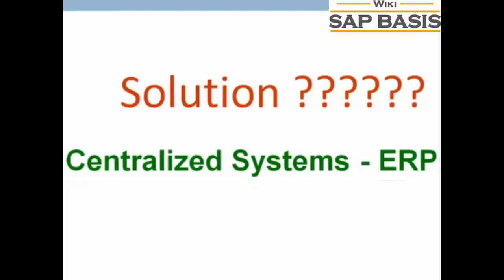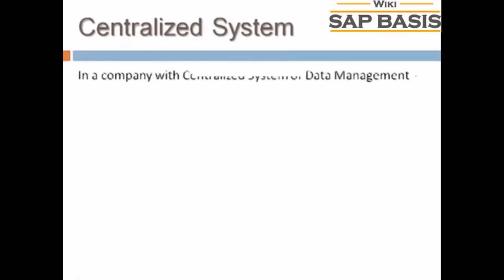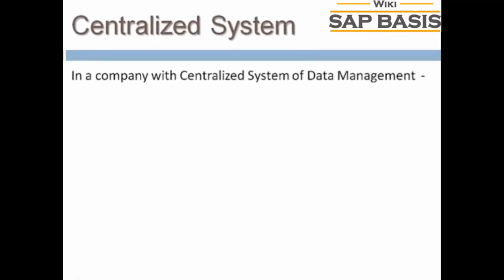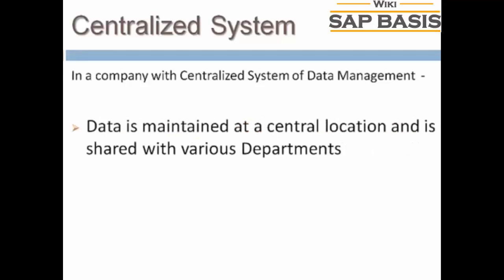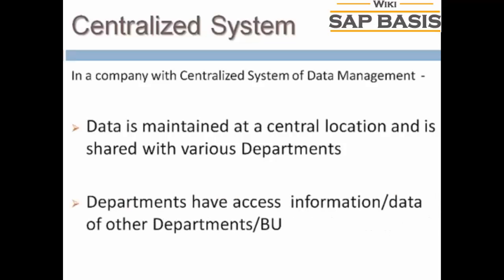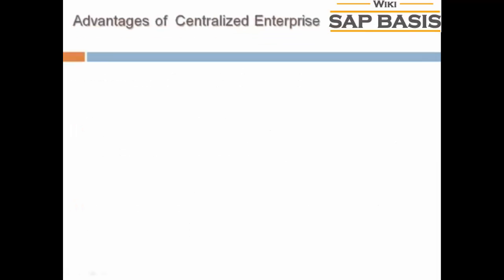The solution lies in centralized systems, that is ERP. In a company with a centralized system of information and data management, data is maintained at a central location and is shared with various departments. Departments have access to information or data of other departments. Let's look at the same business process again to understand how a centralized enterprise system helps overcome the problems posed by a decentralized enterprise system.